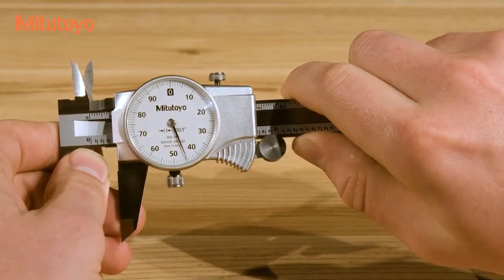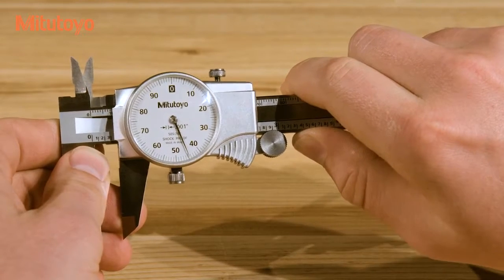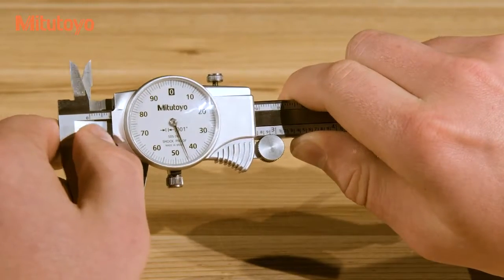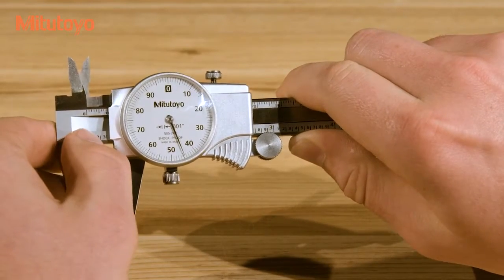Reading the caliper is a two-step process. First, look at the sliding jaw and note the last main scale graduation that it passed. In this case, that's the 3, so that's 0.3 inches.